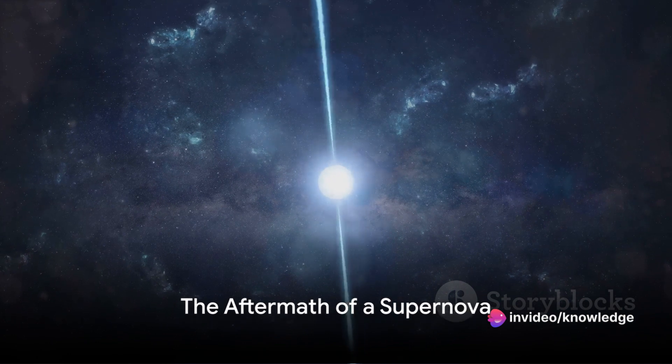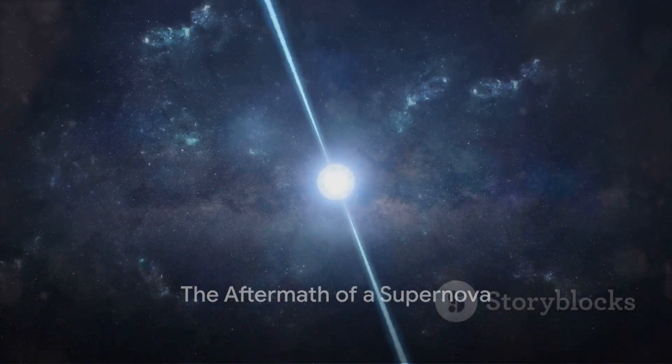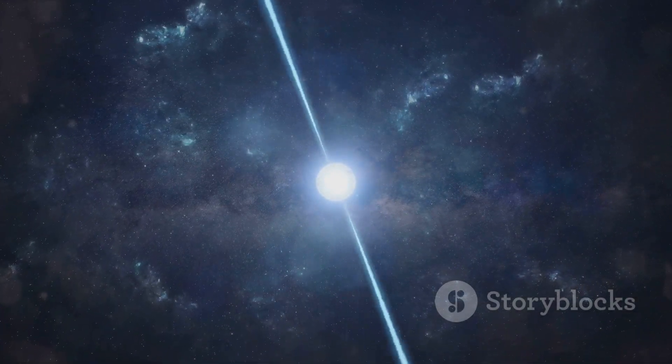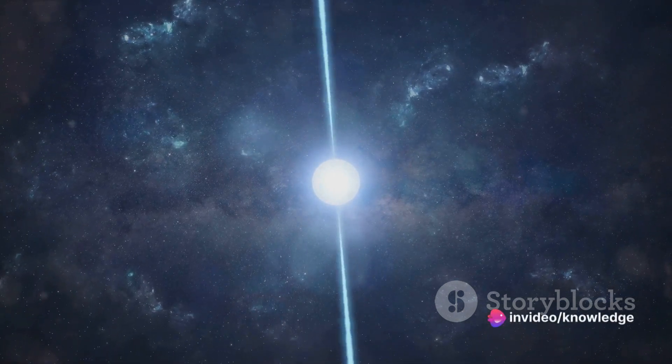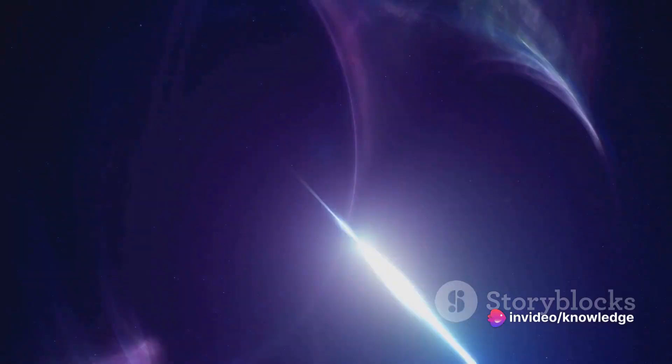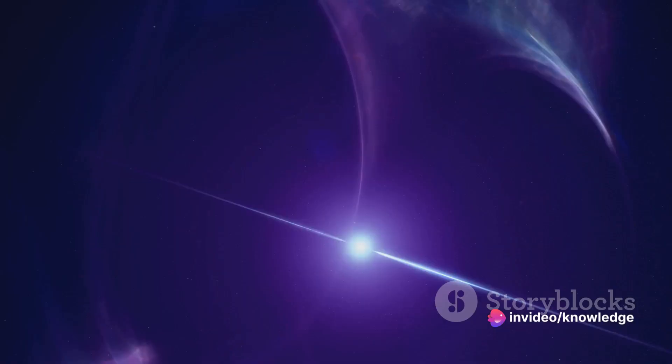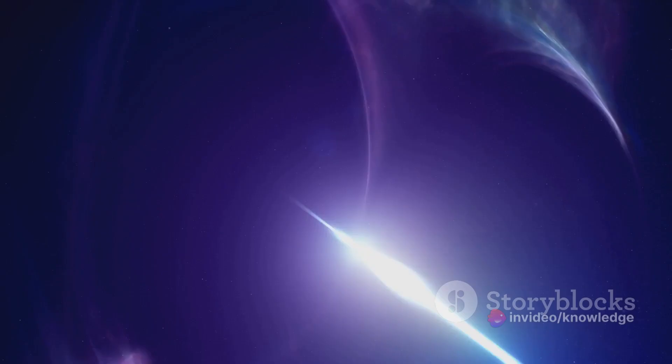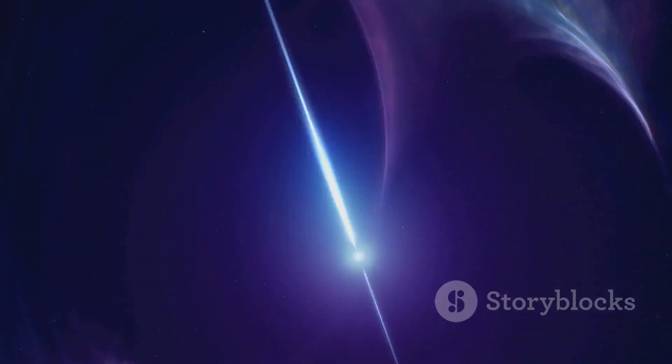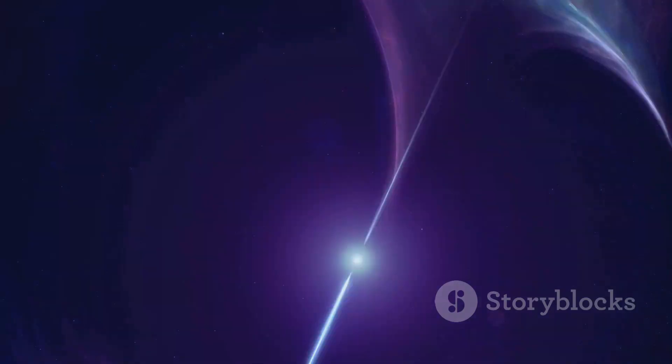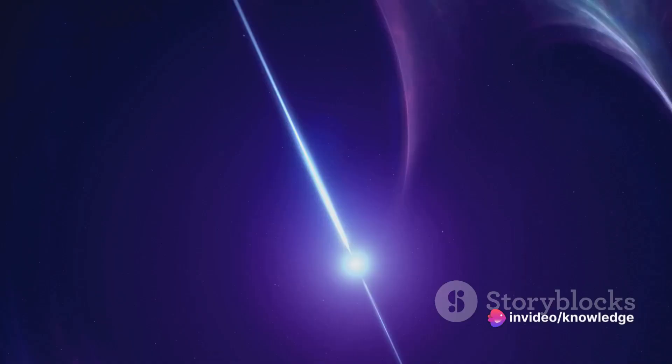But even after the initial explosion, the aftermath of a supernova would continue to impact the universe. Following the explosive demise of a star, what remains is a dense, hot core. If the mass of this core is about one and a half times that of our sun, it will shrink down to a size of around 20 kilometers in diameter, forming a neutron star. These celestial bodies are so dense that just one teaspoon of their matter would weigh about a billion tons on Earth.